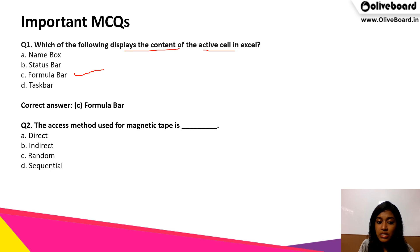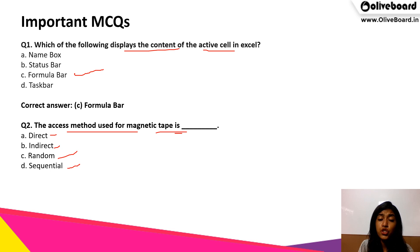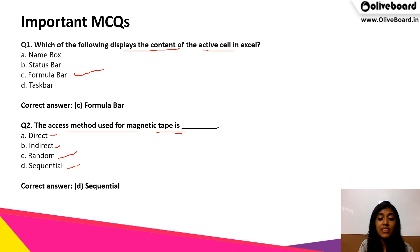The next question: the access method used for magnetic tape is? The options are direct, indirect, random, or sequential. The correct answer is D — sequential.